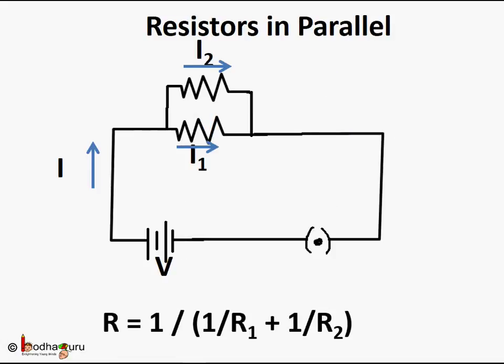Whereas when resistors R1, R2, R3 etc. are connected in parallel, the total resistance of the circuit R is equal to 1 divided by (1/R1 plus 1/R2 plus 1/R3) and so on. Here the same potential difference V is seen across all the resistors, whereas different currents I1, I2, I3 etc. flow through each resistor based on its resistance value.